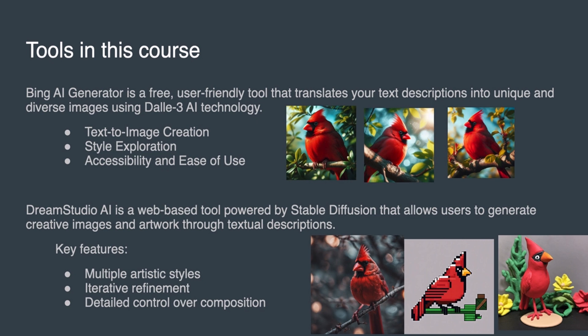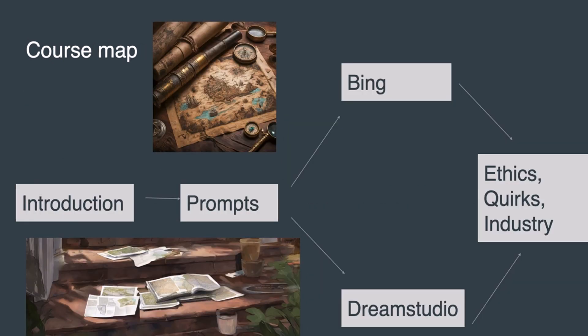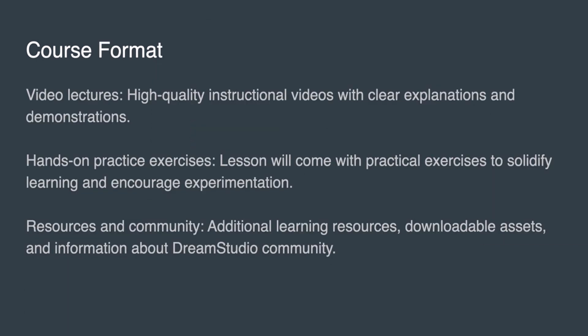The course map will begin with an introduction and look at how to effectively use prompts, which are the key to getting the most out of AI image generators. Going forward, we'll look at other products in the field, then circle back to a general AI image conversation about ethics, quirks, and industry uses of AI. The format will be video lecture, hands-on demonstrations, and downloadable resources like cheat sheets.